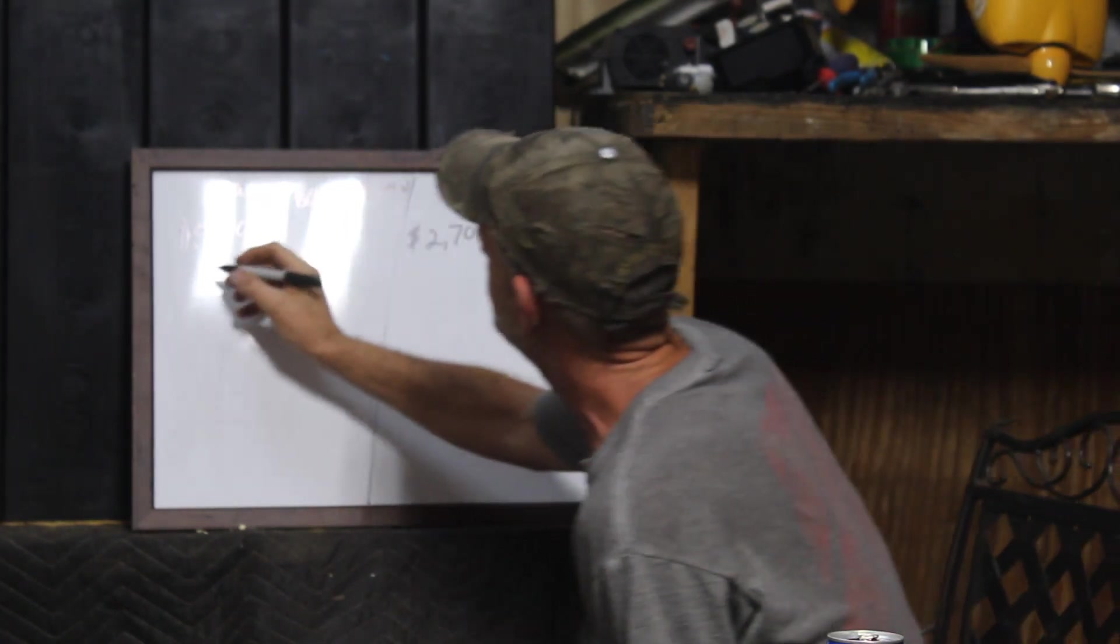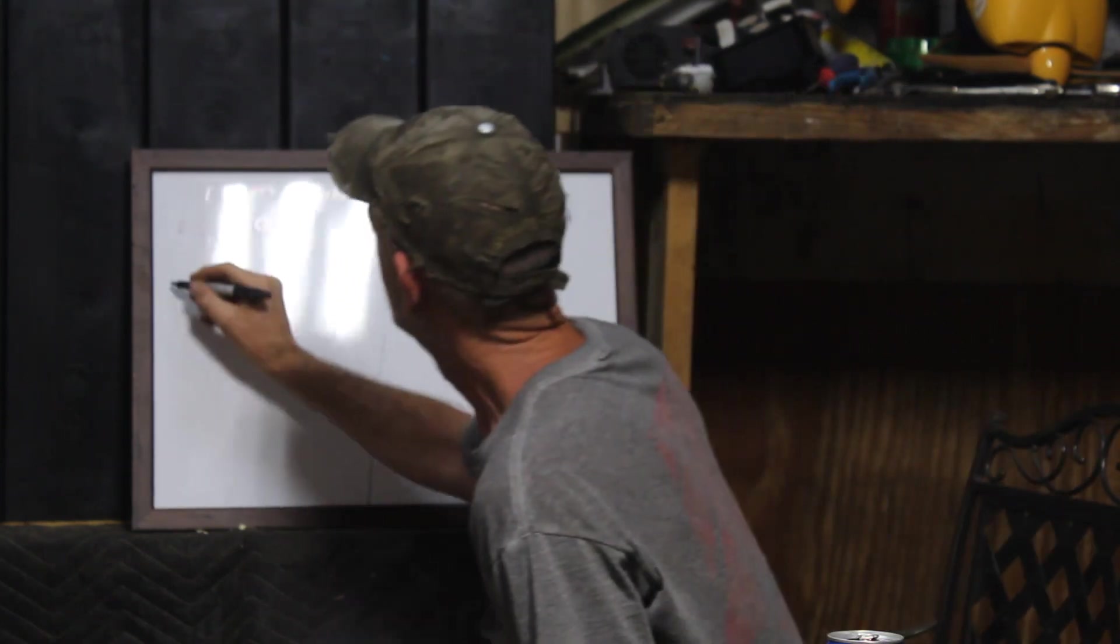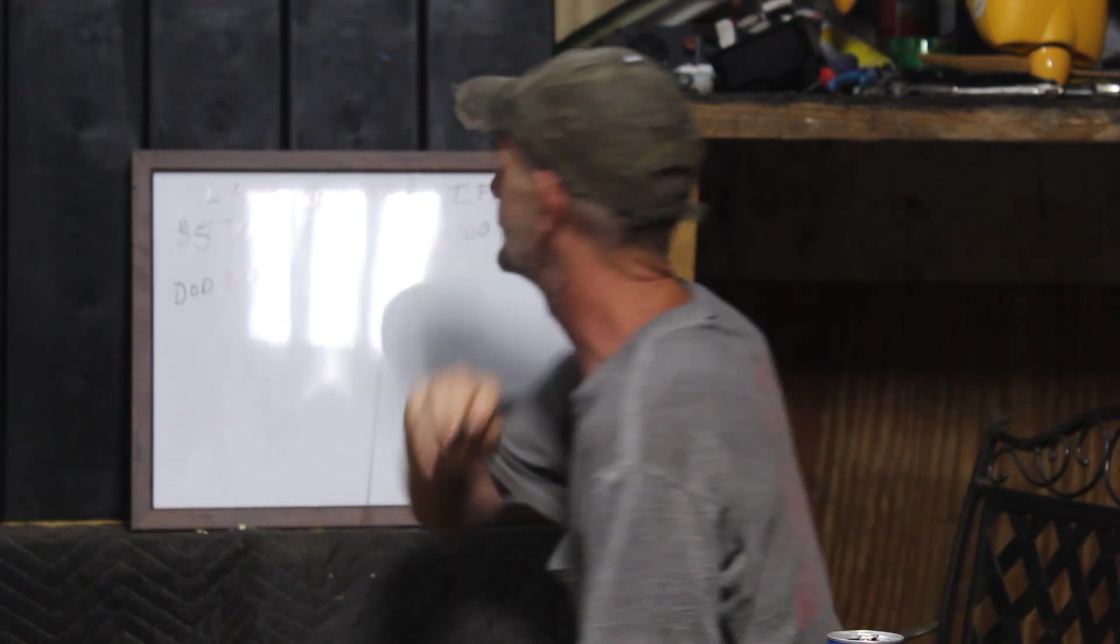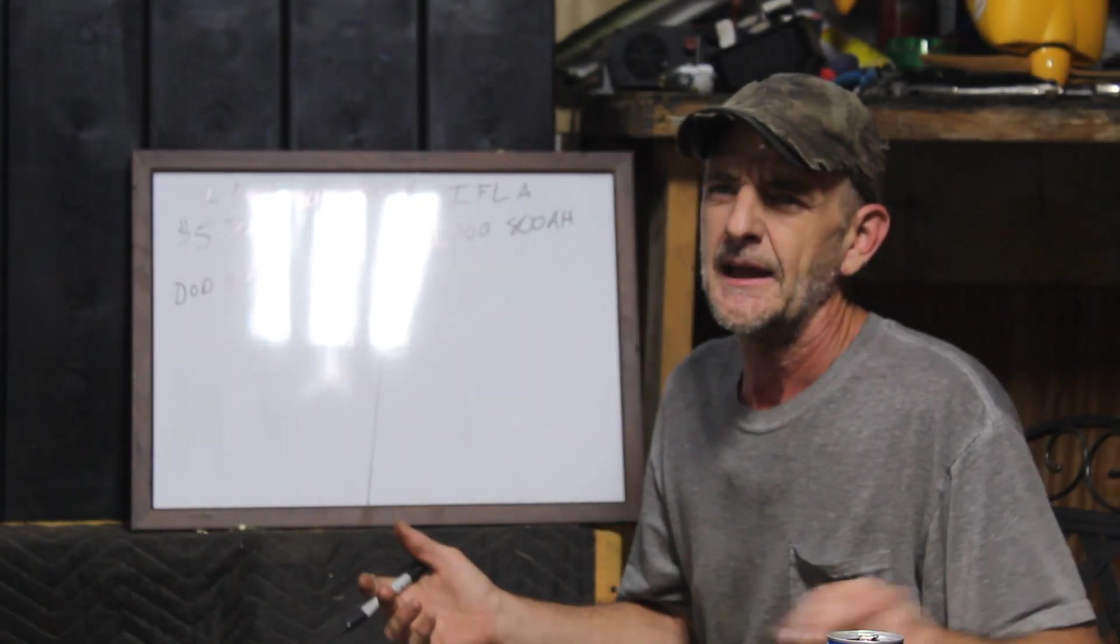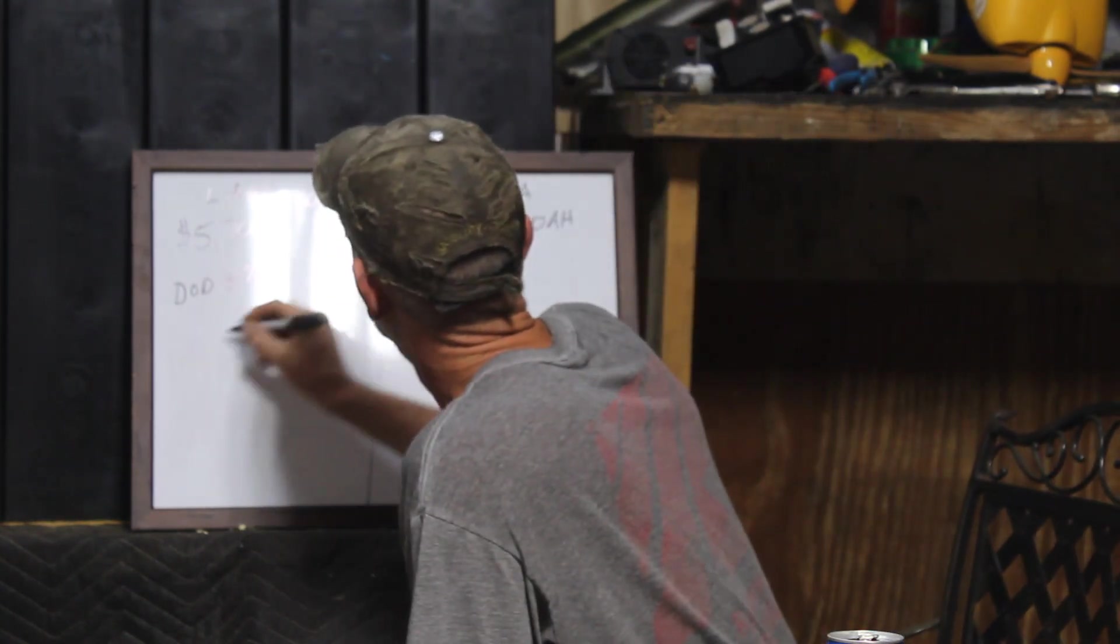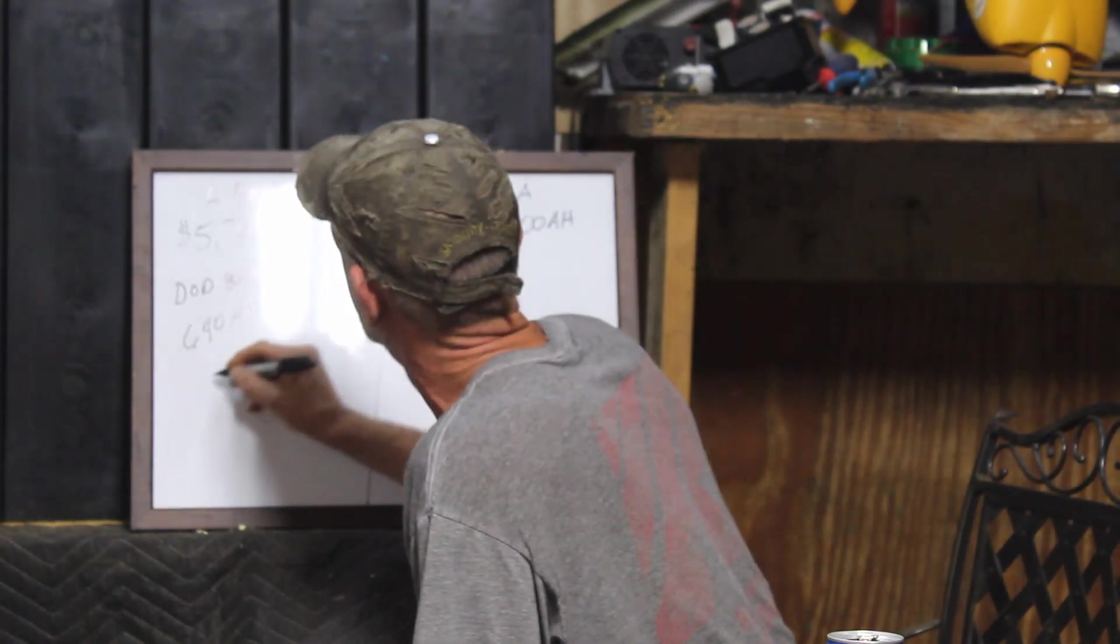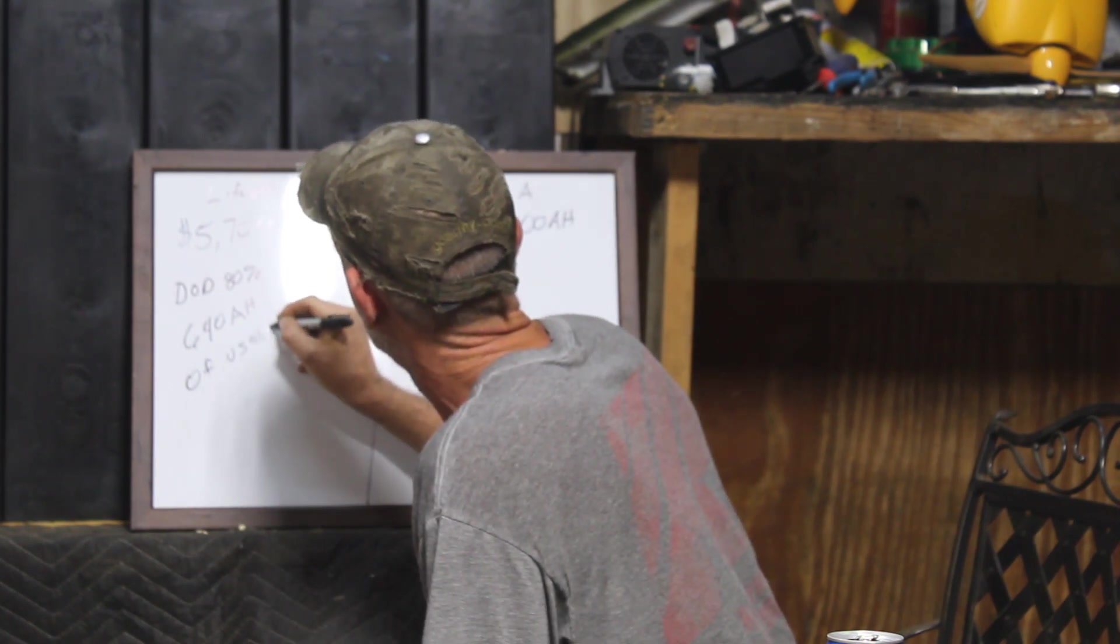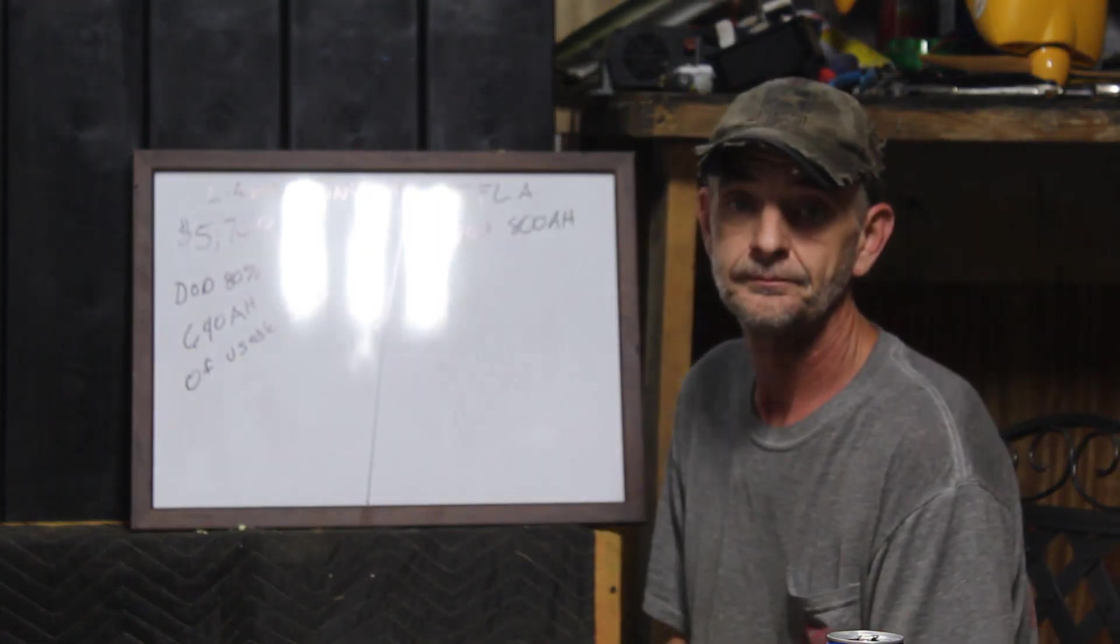Recommended depth of discharge on this LiFePO4 is 80%. So what does that get us? 80% of 800 is 640 amp hours. So that gets us 640 amp hours of usable juice. Hey Larry, we can't see the board, can you adjust it from the light?